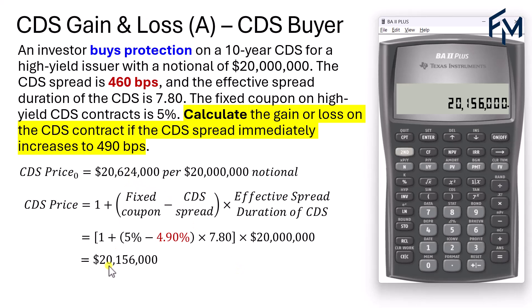When the CDS price drops, it is a gain for the short position and a loss for the long position. The party that buys the CDS — the party that buys protection — is taking the short position on the reference entity or the underlying. So this would be a gain for the investor.